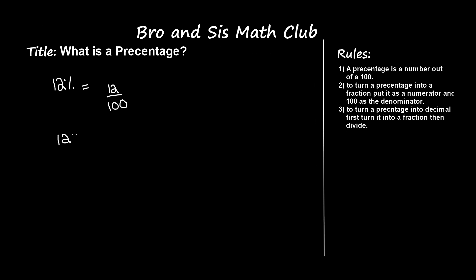Now let's learn to make 12% into a decimal. To do this, first you have to make it into a fraction. So we know that 12% made into a fraction is 12 out of 100. Now to turn this into a decimal, we need to divide the 12 by 100.